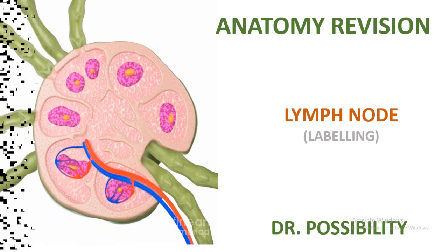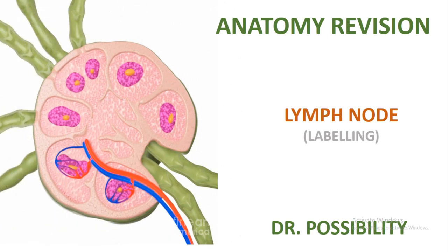Hello guys, this is Dr. Possibility from Excel Academy. Kindly make sure that you subscribe to our YouTube channel and register with Excel Academy. In this tutorial I'm going to explain how you can label the lymph node. The lymph node is one of the major organs of the lymphatic system and its major purpose is to filter the lymph.